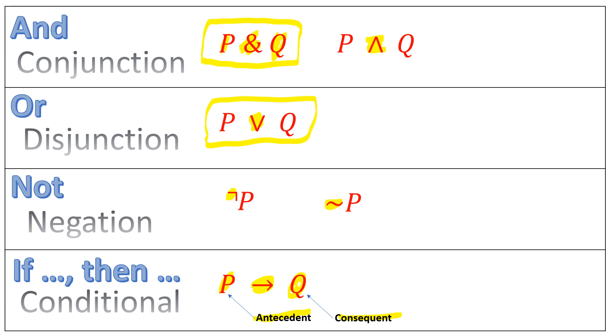So it's pretty obvious with the and, the or, the not. The if-then is a little bit more confusing, but we at least have a sense what's going on. We're saying that P is sufficient for Q.